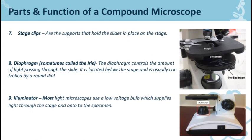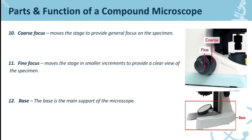Number nine is the illuminator. Most light microscopes use a low-voltage bulb which supplies light through the stage and onto the specimen. Yung illuminator naman ay gumagamit ng low-voltage bulbs na magsu-supply for us to be able to see our object that is being used to be seen in the microscope.